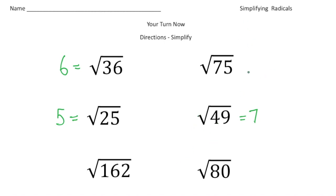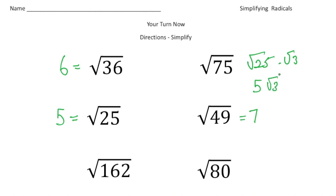So the square root of 75 — I can break that down to the square root of 25 times the square root of 3. The square root of 25 is 5, so it's going to be 5 radical 3. That's the simplified version of the square root of 75.